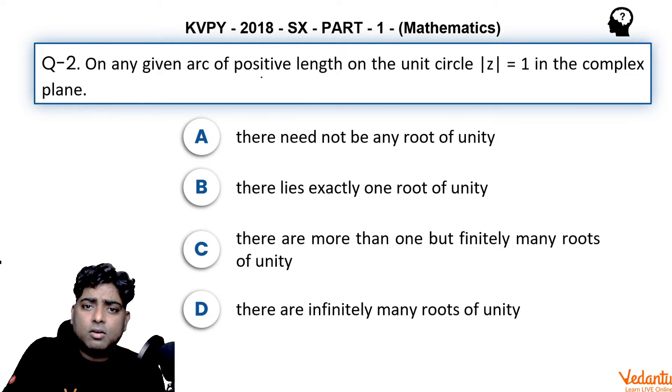On any given arc of positive length on unit circle mod z equal to 1 in the complex plane. Four options are given: there need not be any root of unity, there lies exactly one root of unity, there are more than one but finitely many roots of unity, or option D, there are infinitely many roots of unity.